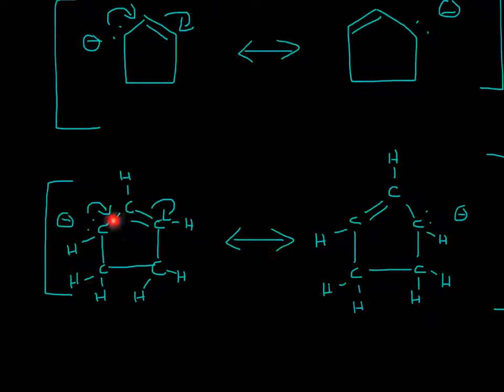But over here, we only have one, two, three, four. This is the arrow. So we only have four. Four minus four is zero, and that's why we have a zero charge here.